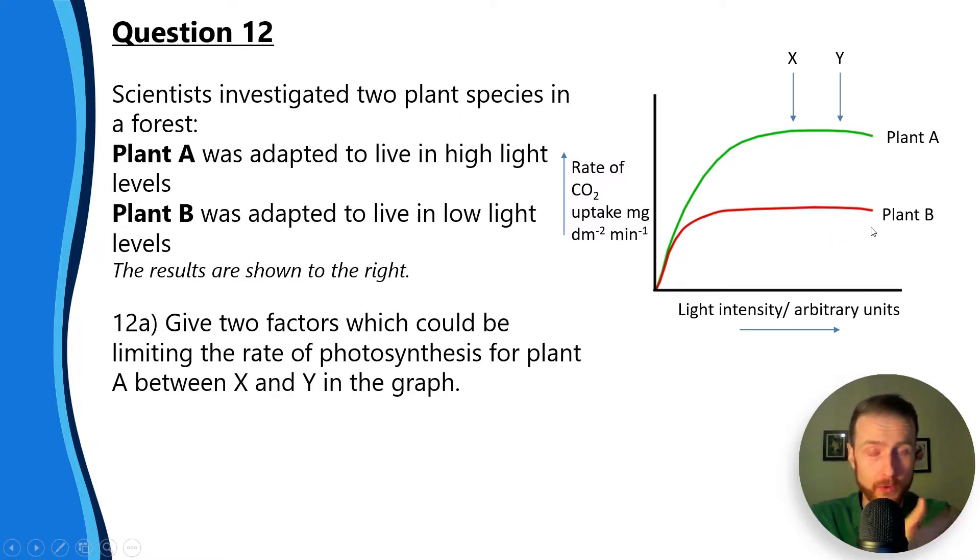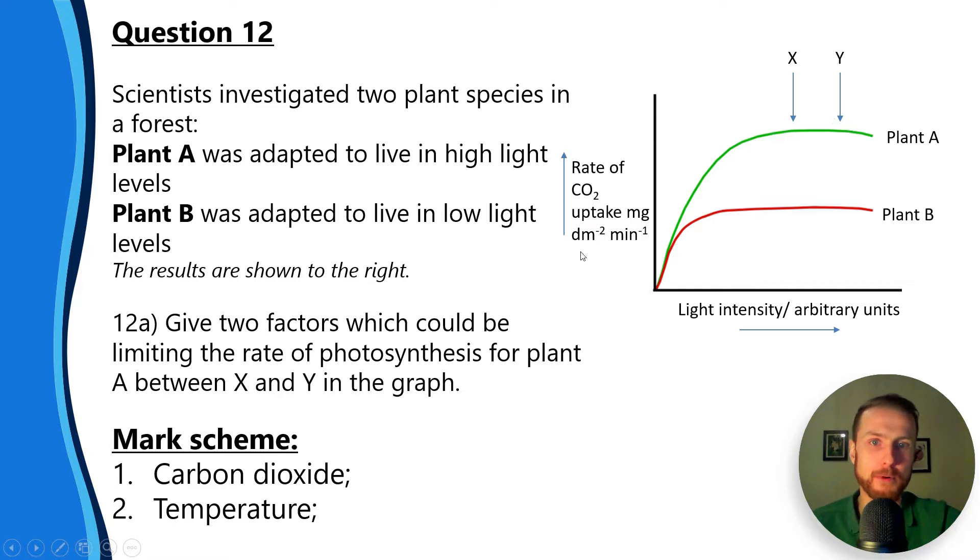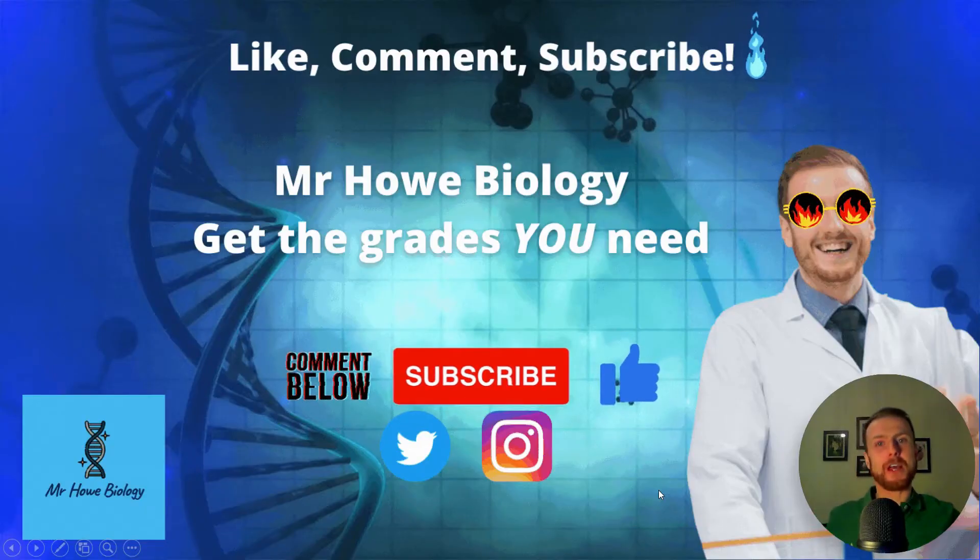Give two factors which could be limiting the rate of photosynthesis for plant A - we're ignoring plant B for this question - for plant A between X and Y. So it's not the increase bit, it's just the plateau. Two factors that could be limiting plant A here: number one, it's not light because we've already spoken about that here, so carbon dioxide and temperature. The three key limiting factors are temperature, light, carbon dioxide.